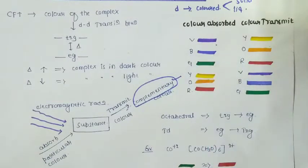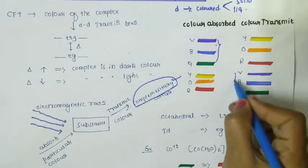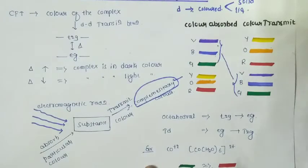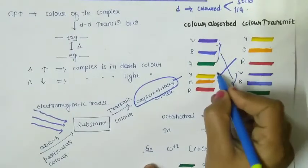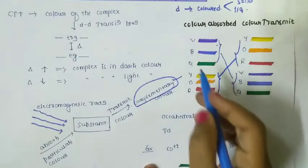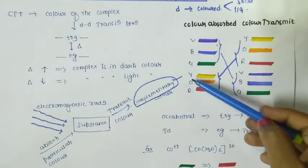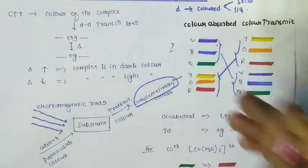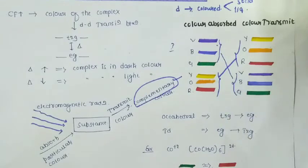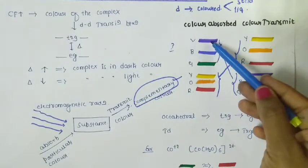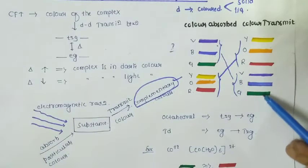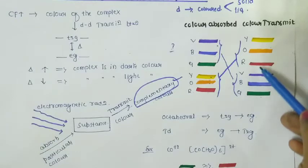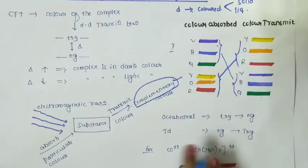How to remember this in the easiest way? V-B-G, these three colors here, and Y-O-R, these three. Remember one cross sign between them. Violet, blue, green on one side; yellow, orange, red on the other. This shows color absorbed and color transmitted relationships. You can also remember it as VIBGYOR, where I is missing from the pattern.